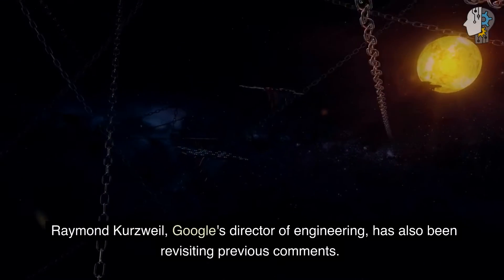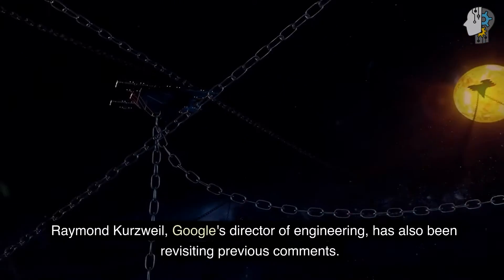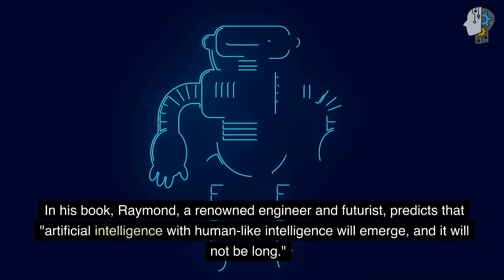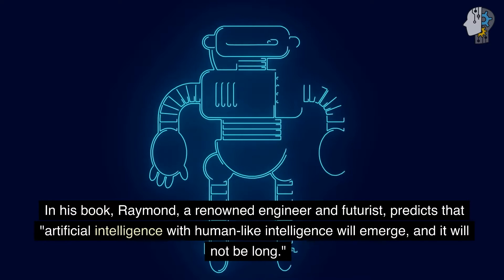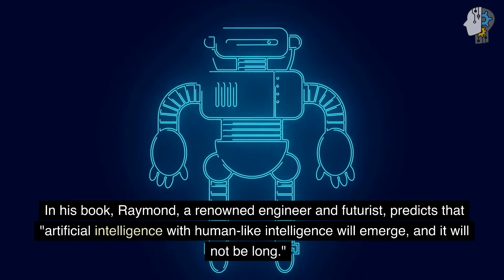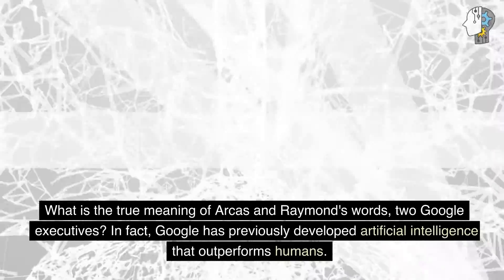Raymond Kurzweil, Google's director of Engineering, has also been revisiting previous comments. In his book, Raymond, a renowned engineer and futurist, predicts that artificial intelligence with human-like intelligence will emerge, and it will not be long. What is the true meaning of Arcas and Raymond's words, two Google executives?